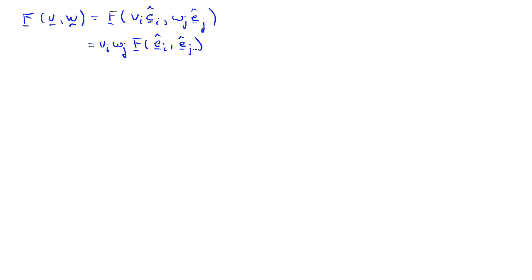Since f is multilinear, I can pull out any scalar multipliers in front of f in any argument. So I can write this as v_i w_j times f acting on ê_i and ê_j. I'll define this number — f acting on two basis vectors — as the components f_{ij}. What I have in the end is f_{ij} v_i w_j.